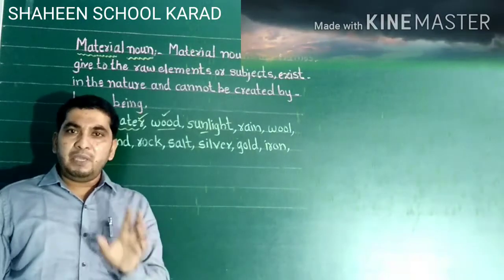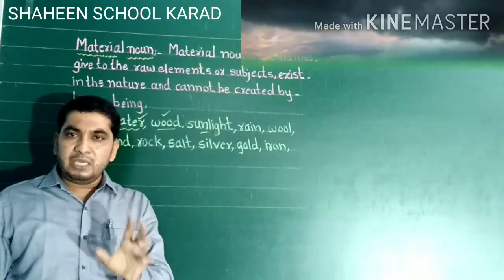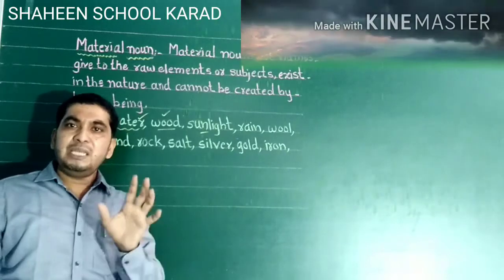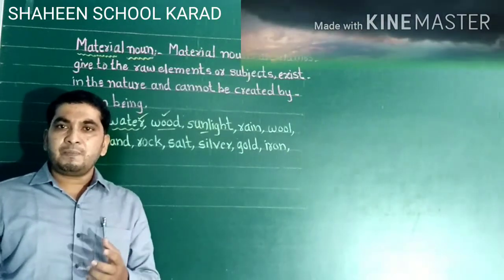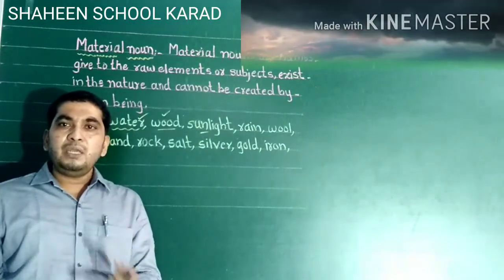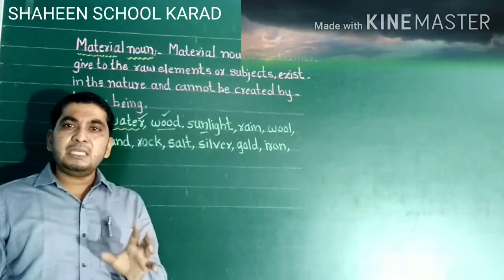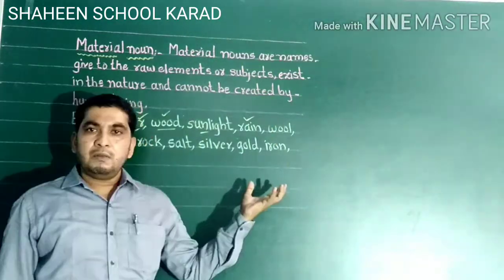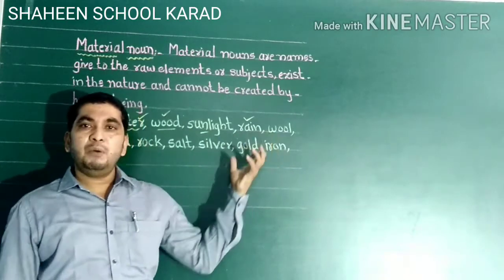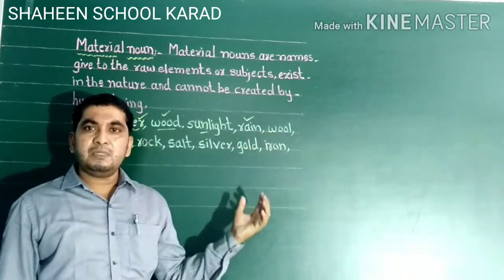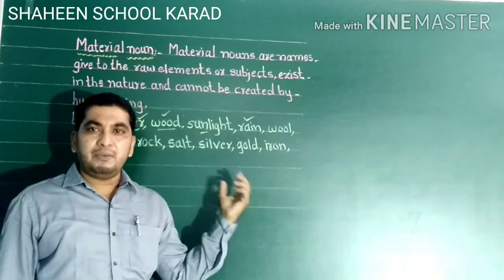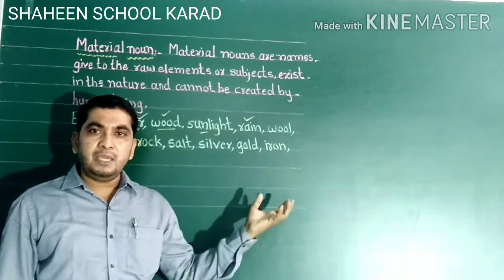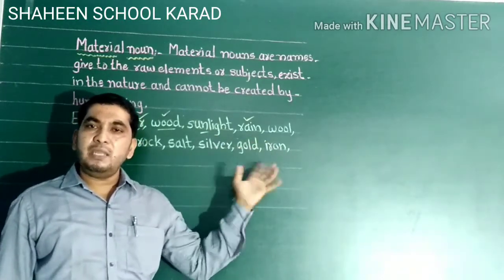Overall, I am trying to say that these elements that are made by nature, we call them material nouns. Rain, for example, is God-gifted — it is given by nature and no human being is able to create it.